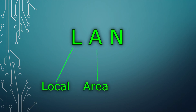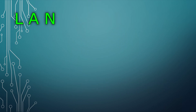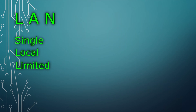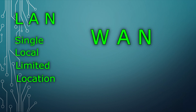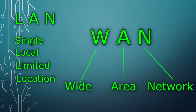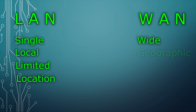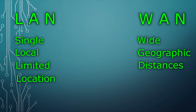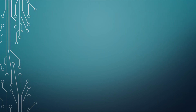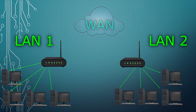In the last video I covered what a local area network was — a type of network tied down to a single local limited location. In the opposite case, you have what is called the WAN, aka the wide area network, where the network is not tied down to a single location but can instead connect together devices from multiple different locations across wide geographic distances. In other words, WANs allow data to be transmitted over long distances, effectively allowing different local area networks to connect to each other globally instead of just locally.